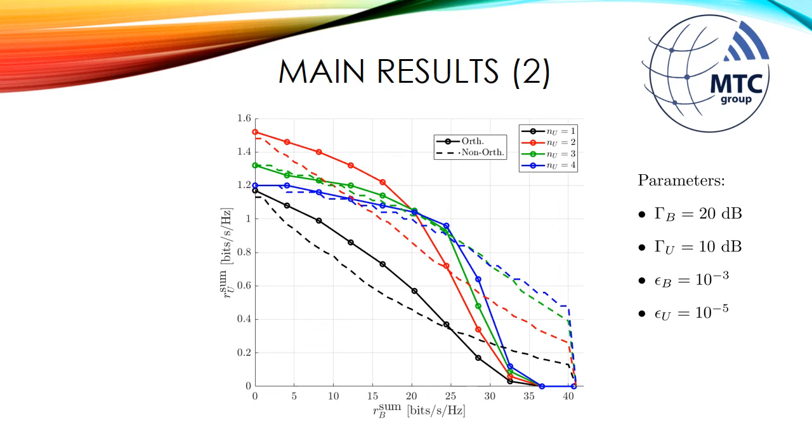However, we also observe that for different points of the curves, when we increase the number of URLLC users performing NOMA, we also increase the URLLC sum rate, which means a double gain, a gain on sum rates, and a gain on number of connected users.